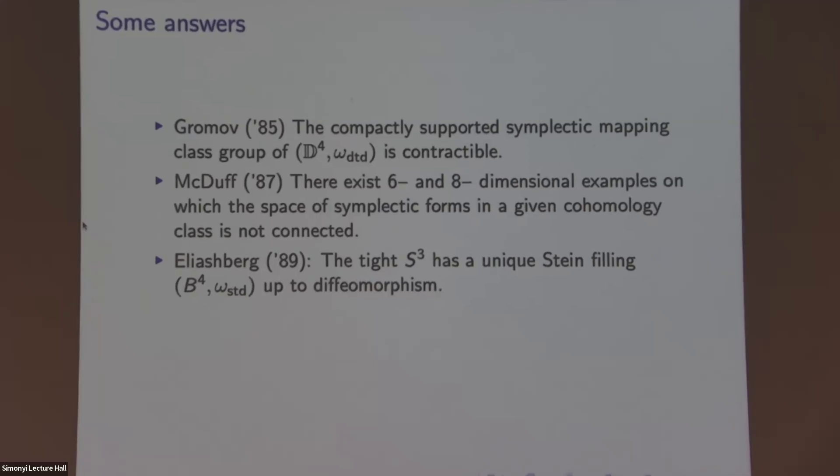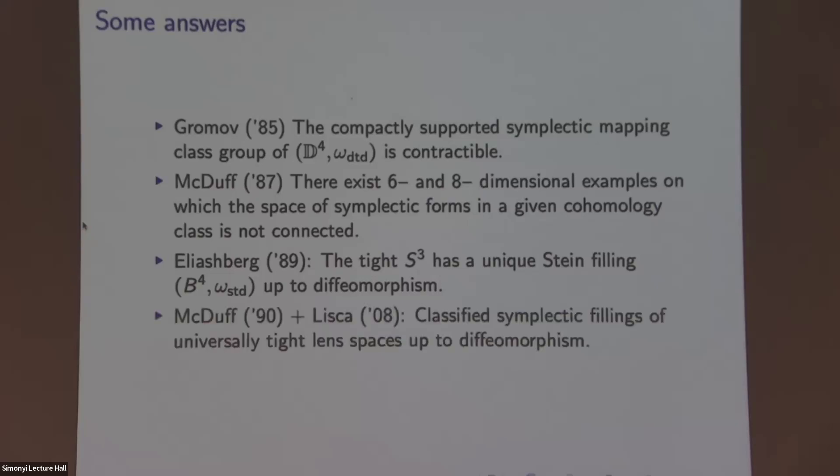So Eliashberg showed that for the tight S3, so this is S3 with the standard contact structure, although without telling you more, you probably don't have a... So this is the standard boundary of a symplectic B4. The tight S3 has a unique symplectic filling up to diffeomorphism. And then similar to this line of thought, McDuff and Lisca classified all symplectic fillings of universally tight lens spaces up to diffeomorphism. And then, of course, there are many more.